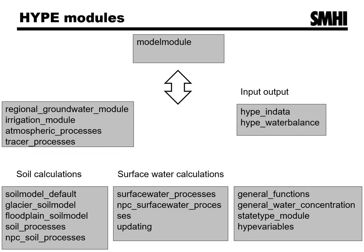These are the HYPE modules. The main module is the model module with procedures that link HYS and HYPE, for instance the subroutine that is called every time step to calculate all hydrological processes for the time step. These modules are for specific hydrological processes. The first calculates regional groundwater and aquifers. Next is irrigation. Atmospheric processes contains subroutines for calculation of local adjusted forcing. Processes for tracers in both soil and surface water.